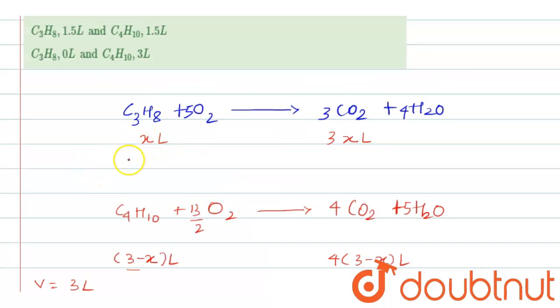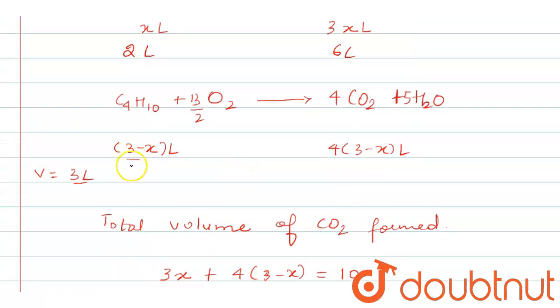X is equals to 2. When 2 liters of propane was subjected to combustion, it produced 3, that is 3 into X, which is equals to 6 liters of CO2. And when 3 minus 2, that is 1, when 1 liter of butane was subjected to combustion, it produced 4 liters of CO2.